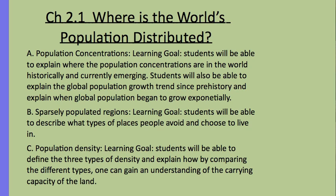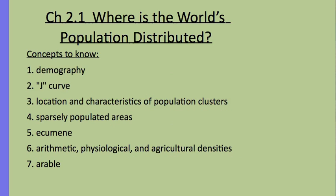The third section, population density — the learning goal is that students would be able to define the three types of density and explain how, by comparing the different types, one can gain an understanding of the carrying capacity of the land. Concepts to know are demography, the J curve, the location and characteristics of population clusters, sparsely populated areas, ecumene, arithmetic, physiological, and agricultural densities, and arable.